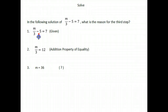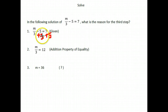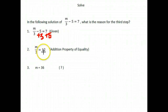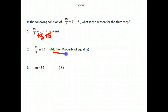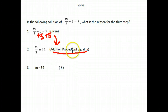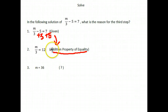The next thing we would do is add 5 to both sides. We had a negative 5, so we add 5 to both sides to remove it, which brought us to m over 3 equals 12. When we write down our justification, it's the reason we were able to do the step between these two. Our reason is the addition property of equality — that's why we were allowed to add 5 to both sides.